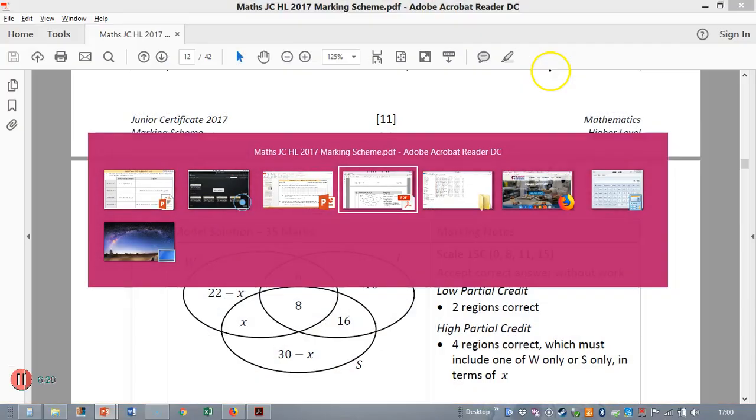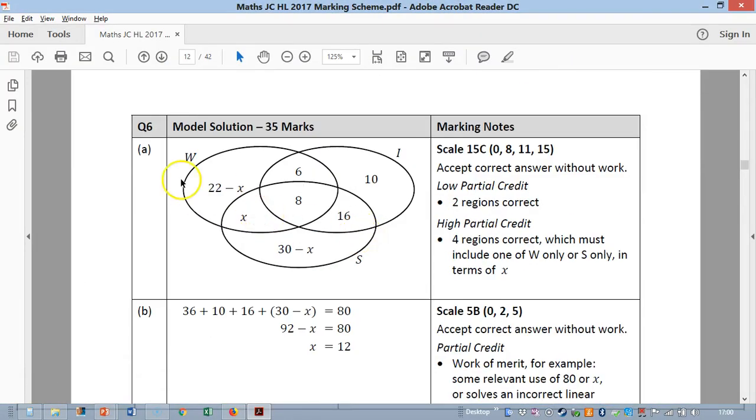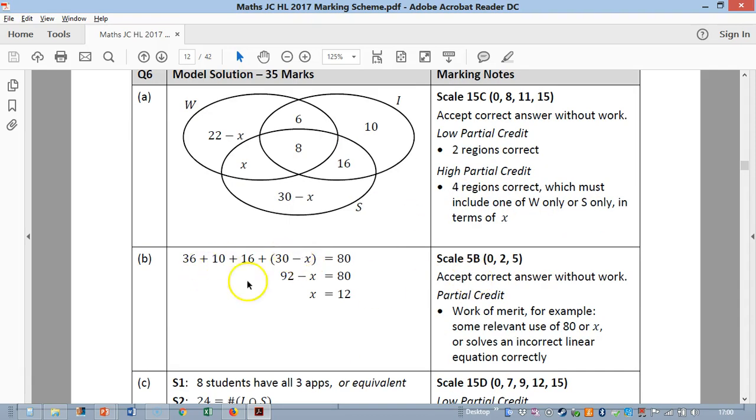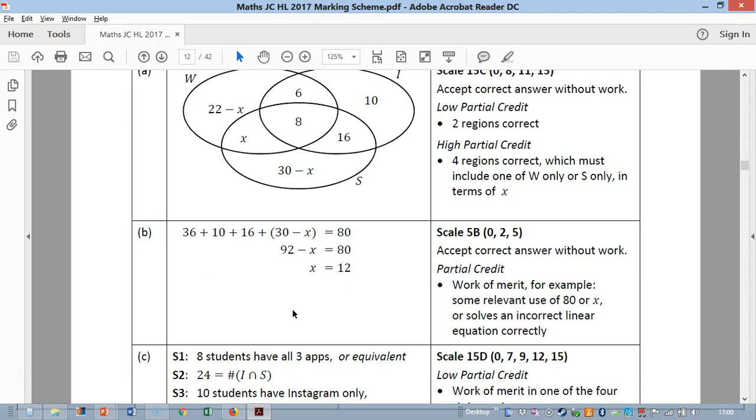If we looked at the marking scheme, if you had two things correct in those parts you got the 8. This should be, even getting those two things in the middle, four regions correct, you get 11, and obviously full correct is all 15. Part B was pretty handy, five marks.